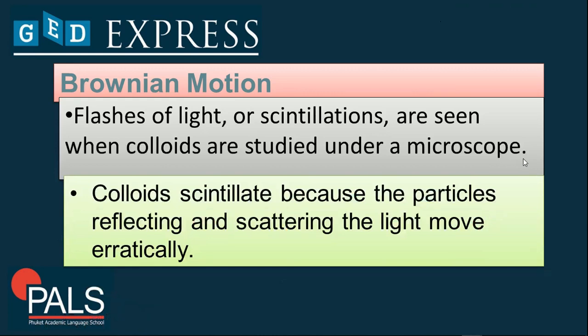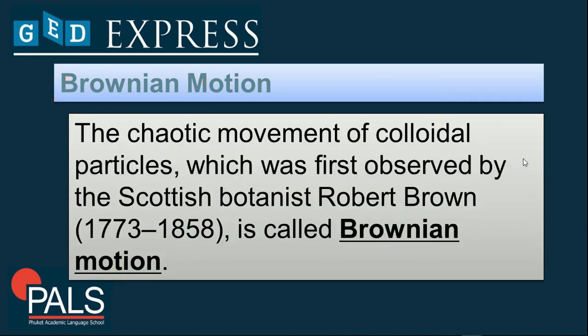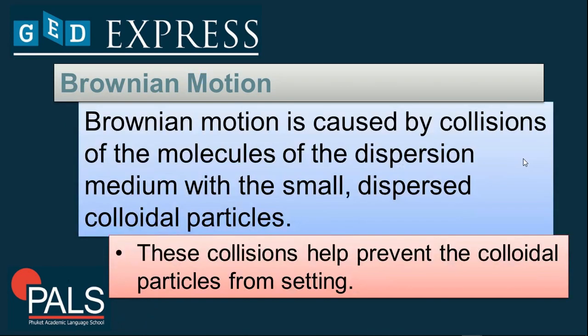Next, we have Brownian motion. It is defined as flashes of light or scintillations that are seen when colloids are studied under a microscope. This is a random zigzag motion of particles. Colloids scintillate because the particles reflecting and scattering the light move erratically. Brownian motion is a chaotic movement of colloidal particles, first observed by Scottish botanist Robert Brown — now known as Brownian motion. This collision helps prevent the colloidal particles from settling.